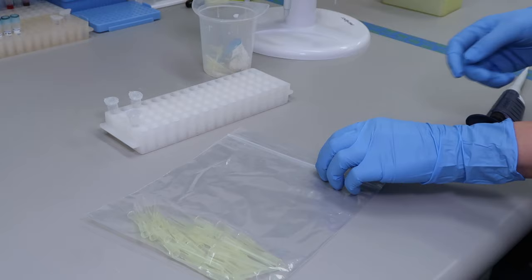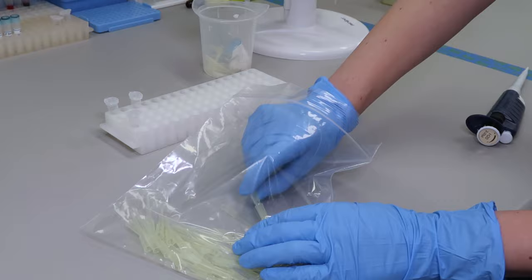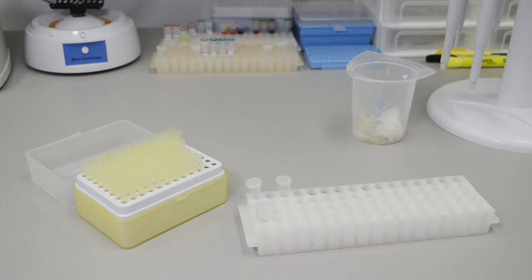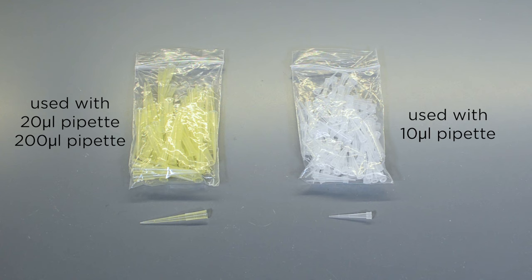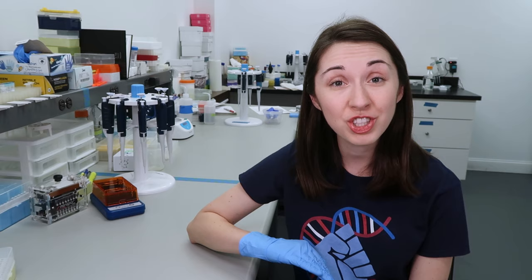If your pipet tips come in a loose bag, you will want to carefully pick a tip up by the sides and slide it firmly onto your pipet. If your tips are provided in a rack, firmly tap your pipet into one of the tips to secure it to the end. Always make sure that you are using the correct size tip for your pipet. With both methods, make sure the tip is firmly attached. And make sure to always use a tip. Liquid should never enter the main body of the pipet.